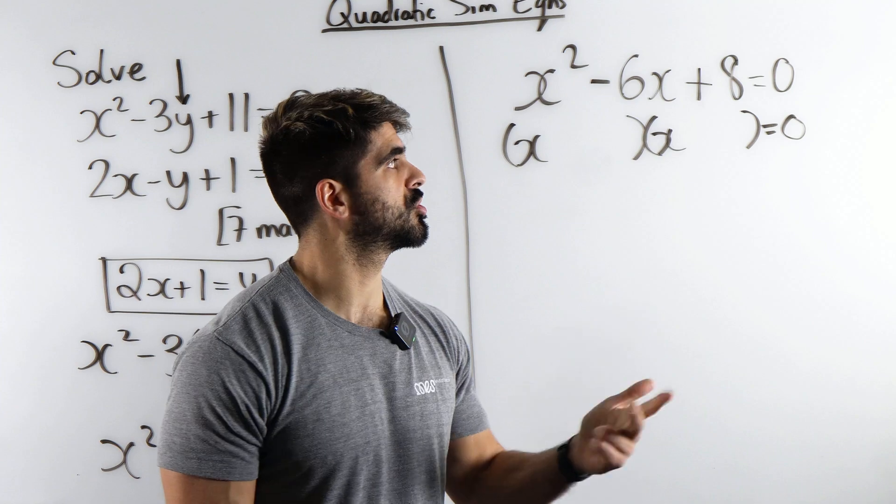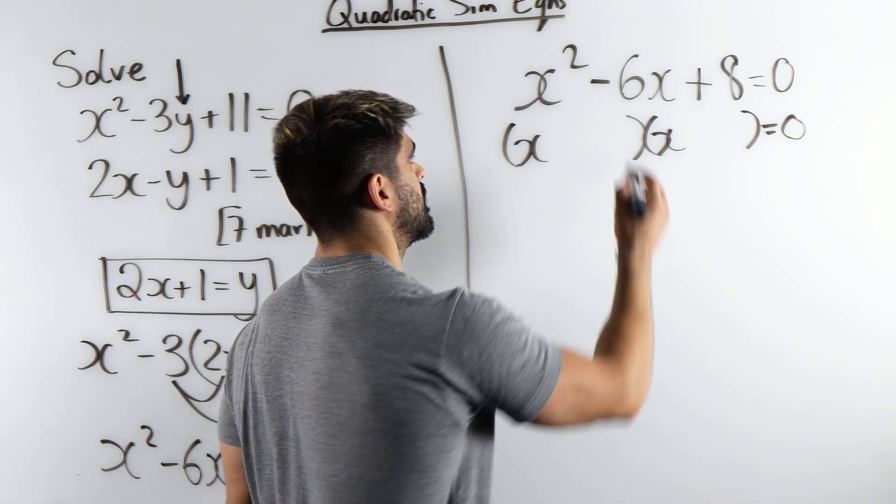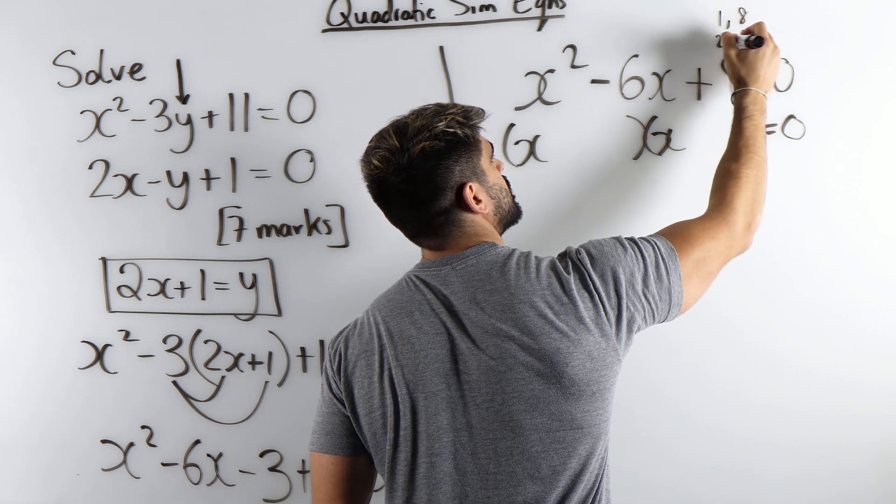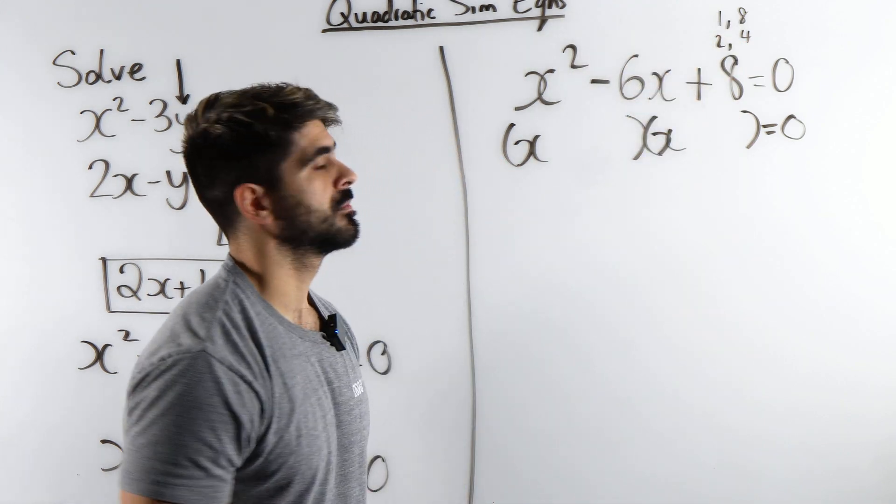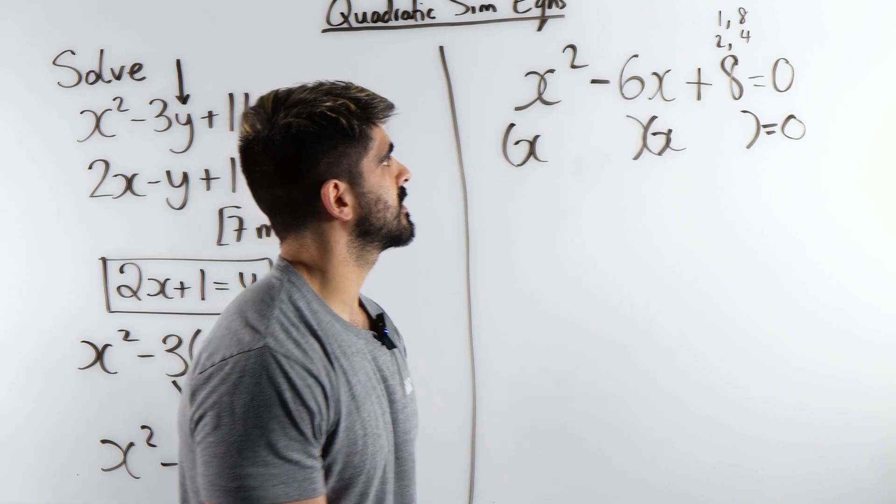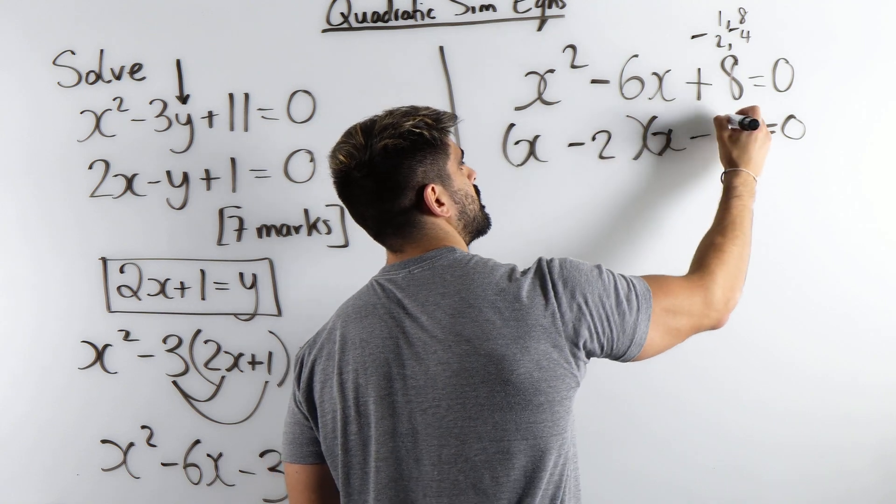For 8 we have 1 and 8, 2 and 4. Which one of those combinations are going to add to make 6? Particularly minus 6. It's obviously going to be 2 and 4. To make minus 6, they both need to be negative. So we have minus 2, minus 4.